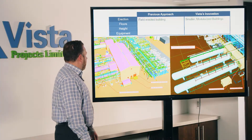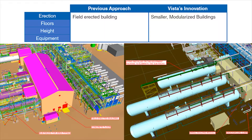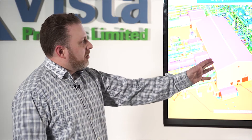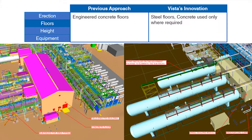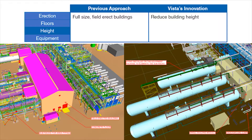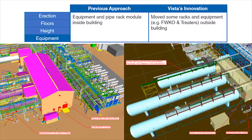Here's an example of a field-erected building. You can see a large building with a high eave, a canopy over the equipment, and modules to the side. In our new design, we've modularized the building. This has allowed us to take concrete floors from the previous building and instead turn them into steel skids — steel floors, with concrete only used where required. We've been able to reduce the height significantly. This approach moves toward more smaller modularized buildings. We do studies on equipment to determine which equipment needs to be inside a building and which can be outside.